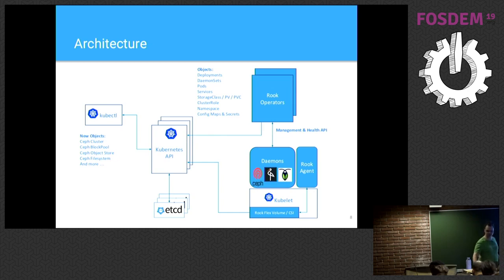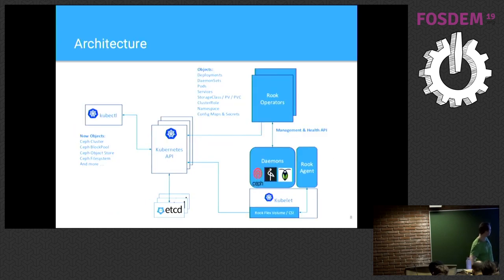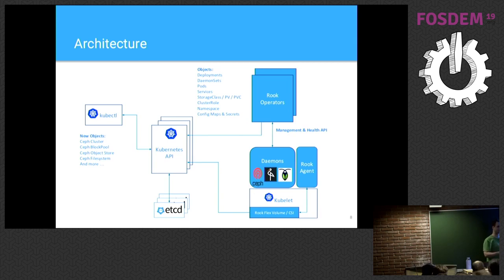This is possible because we have one common object — the Ceph cluster object. With this one object, which the Rook operator knows how to handle and has all the supported options in it, you can go ahead and toggle the dashboard on the fly. If you have it set to false when you created the cluster initially, you just go edit it, set it to true, apply it against the Kubernetes API, and the Rook operator will pick up this change and enable the dashboard.